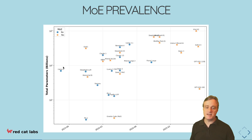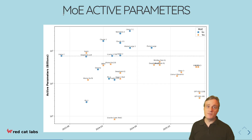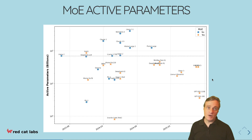The chart is coloured so you can see which are the MoE models and which are the regular models. On the left-hand side you can see a lot more dense models, and as we move towards the right-hand side we have large numbers of actual parameters, but all of these are mixture of experts within the last time period. If you look instead at the number of active parameters, the dense models have the same number of active parameters as actual parameters, but the MoE models have many fewer active parameters — showing a trend towards lower numbers of active parameters over time.